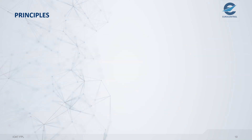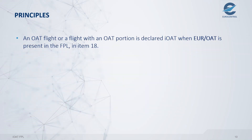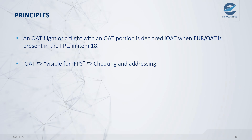In order to declare a flight as IOAT, EUR/OAT shall be included in item 18 of the flight plan. As a result, the flight or portion of flight in OAT becomes visible for IFPS, who then performs the checking and the addressing.